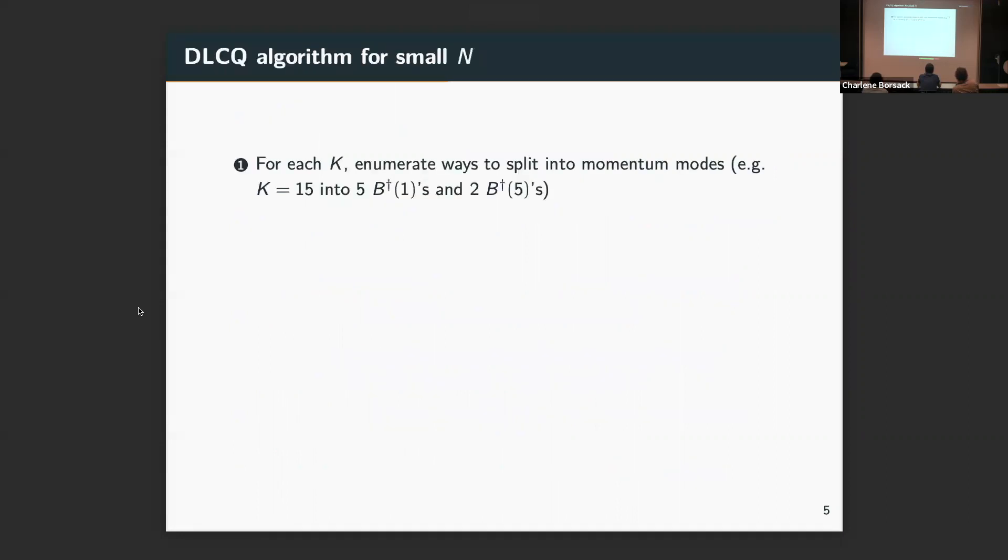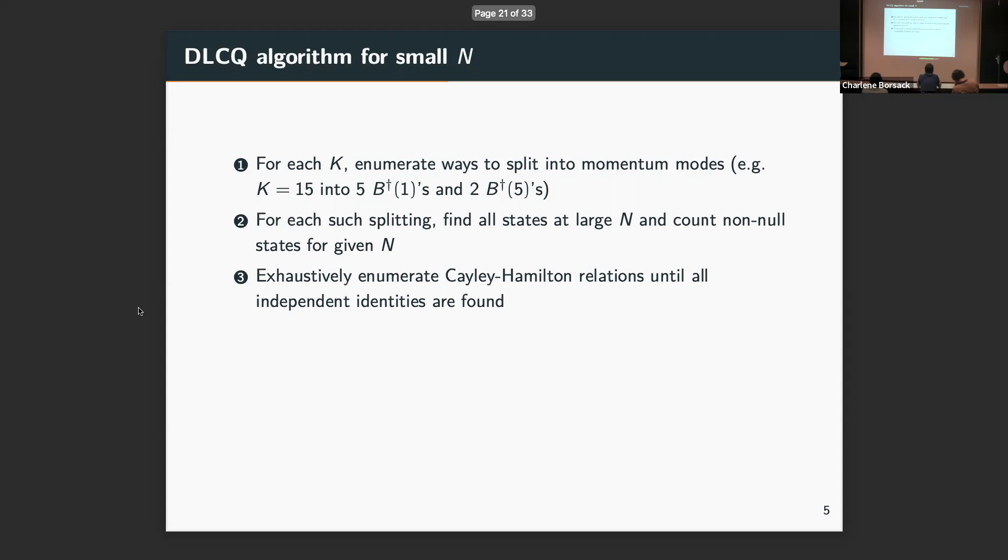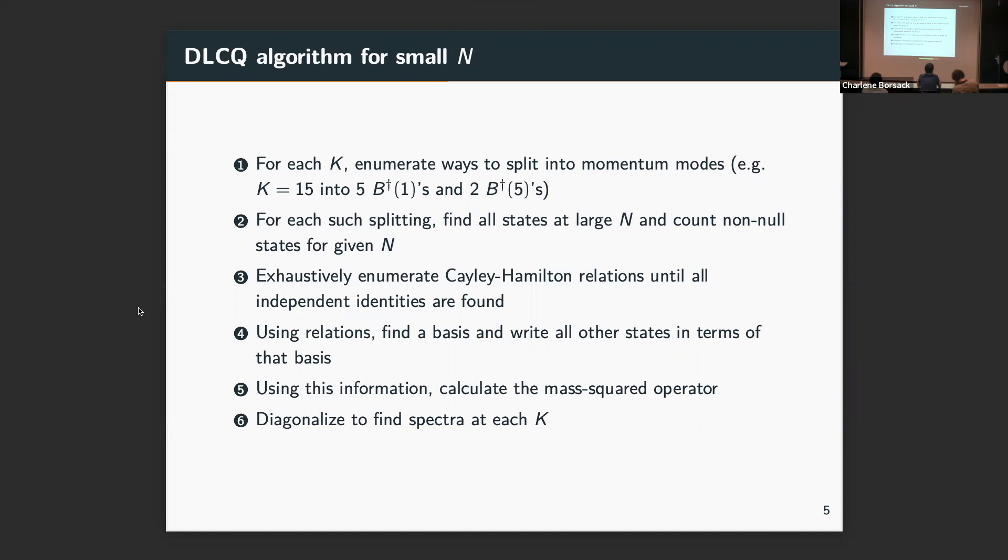Very briefly, what we do is if we want to do DLCQ at some K, we break this into many sub-problems that come down to finding a lot of null states. We can use the representation theory to count how many null states we're looking for and then just start enumerating all those Cayley-Hamilton relations. It is taxing because it's a highly ill-conditioned problem to find the independent relations. But nevertheless, we can grind this out and find the null states. So we can remove those from our basis and then find the actual physical basis that we're looking for. From there, it's DLCQ as usually done. We can compute these operators and diagonalize them to find spectra. I'll show you now the spectra that we have for these small N theories.